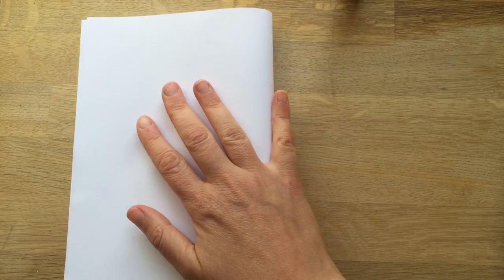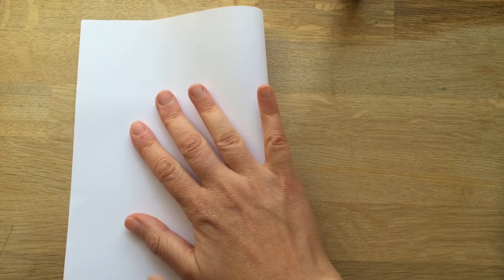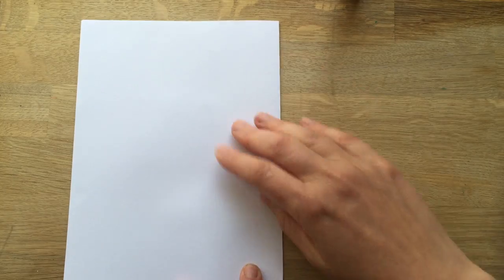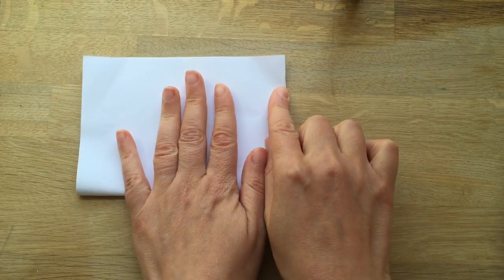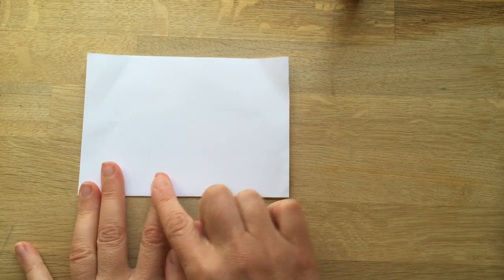So you start off with A4. You fold it in half that way, make nice clean creases. It always helps. Fold it in half again that way, another nice crease, and then you open it.